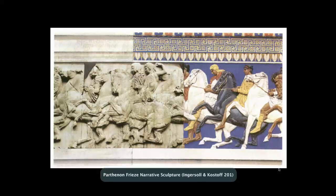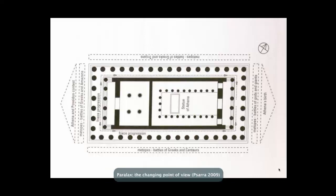Here's what it would have looked like. Some of the friezes are depicting the gods; others are depicting the Pan-Athenian procession — that was an annual event to establish this collective idea of Greece.